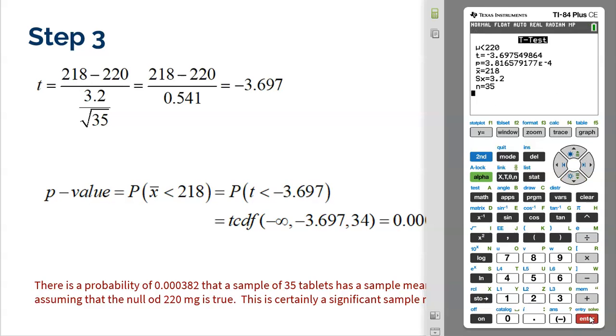Alright, go ahead and hit calculate and we are good to go. There is that t-score. The same t-score I got there by showing all my work by hand. But listen, calculator could do it all for us. Negative 3.697.